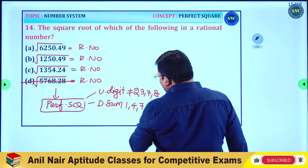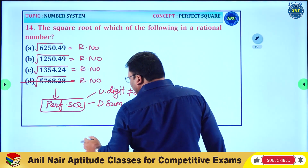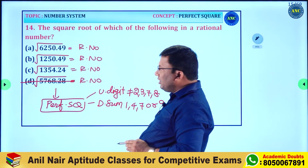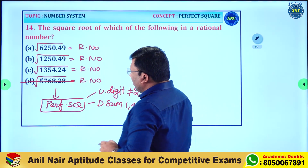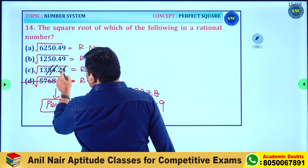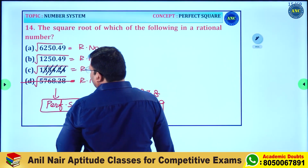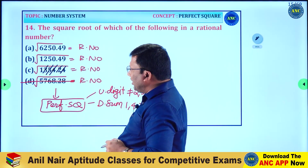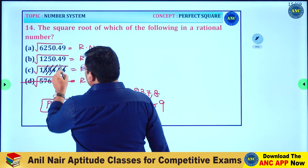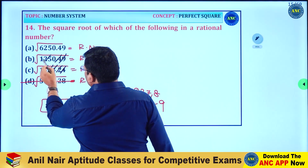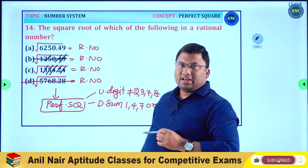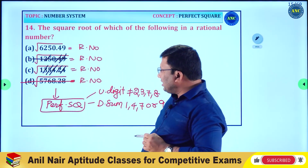The digital sum of a perfect square is always 1, 4, 7, or 9. Checking the options: digital sum 5+4=9, 4+2=6, 6+3=9. Wherever the digital sum is not 1, 4, 7, or 9 — for example, 5+4+1+2=3 — option B is eliminated because its digital sum is 3.